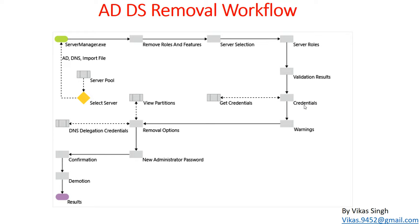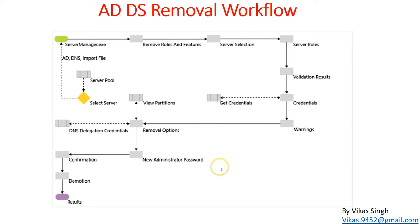In this video we are going to demote the child domain controller, so we have to make sure we type our parent domain credential to remove that information from our parent domain. We also need to verify the partition we are going to change and delete. Then it will give us a warning about DNS delegation credentials — in our case for noida.victor.local — and we have to set a new administrator password for the local account before confirming and completing the demotion.